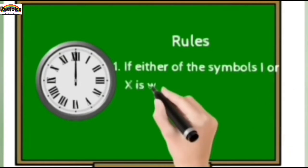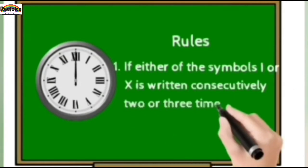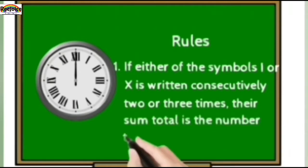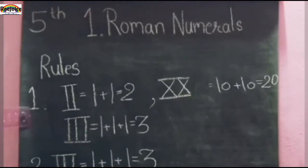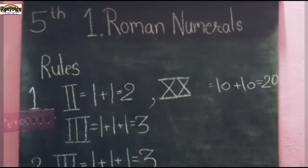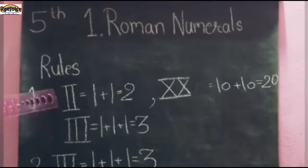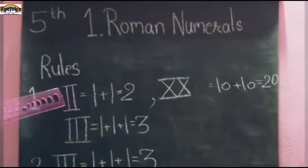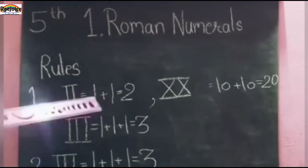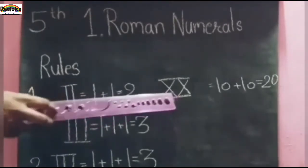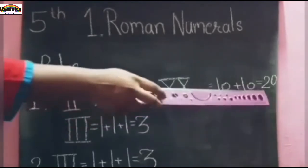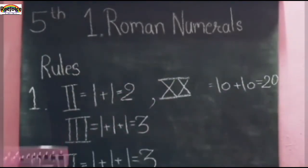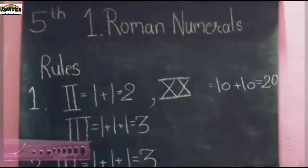Rule number 1: if either of the symbols I or X is written consecutively 2 or 3 times, their sum total is the number they make. Rule 1 में — I or X को consecutively 2 या 3 times लिख सकते हैं, उससे ज़्यादा नहीं, और उसका sum होगा। जैसे II — दोनों का total होगा: I for 1 and I for 1, so 1 plus 1 equals 2. XXX: X for 10 plus X for 10 plus X for 10 equals 30. III means 1 plus 1 plus 1 equals 3.